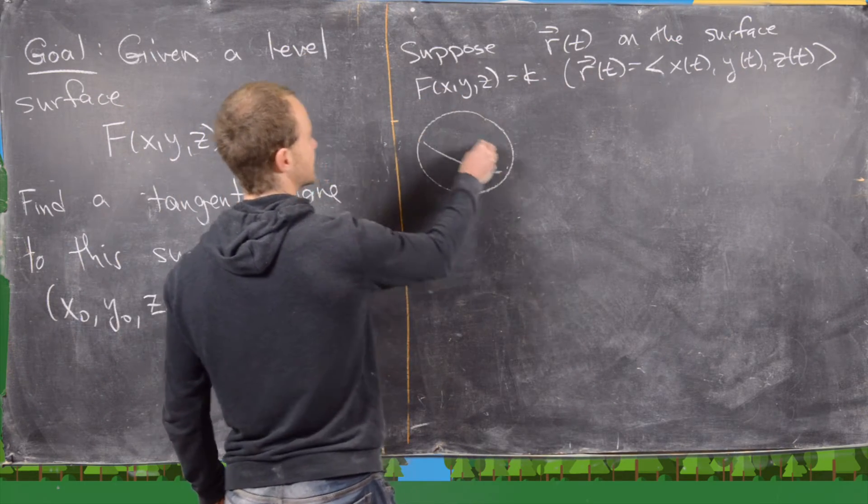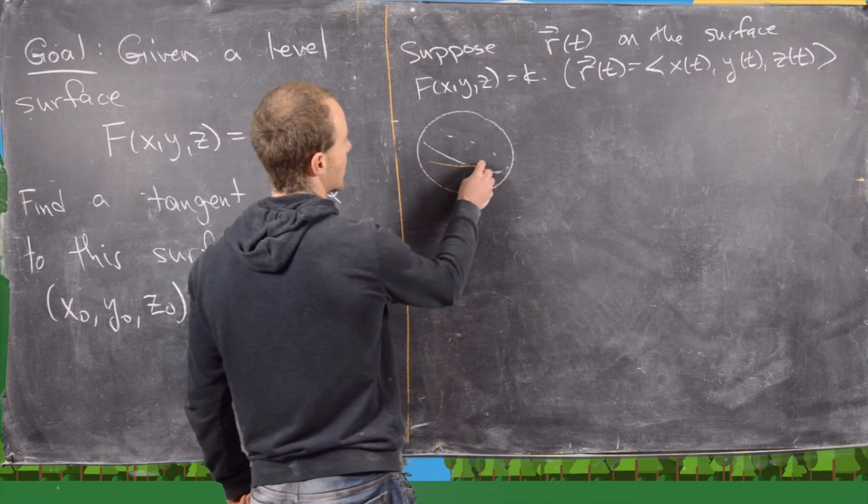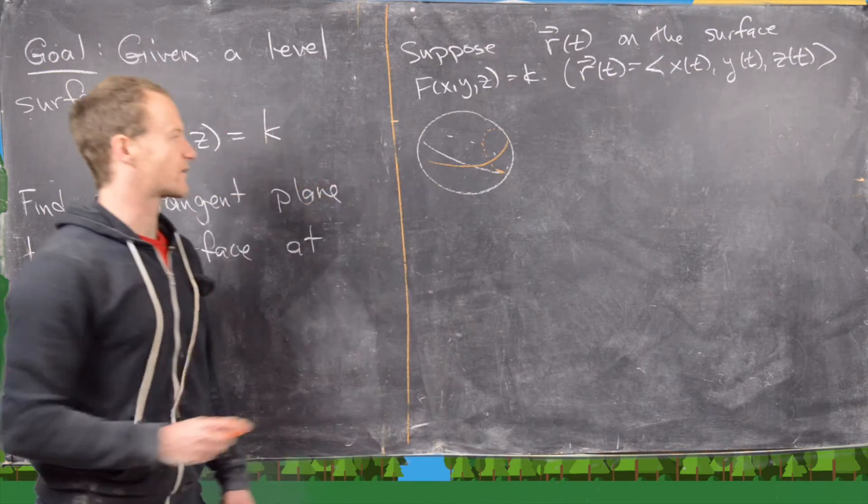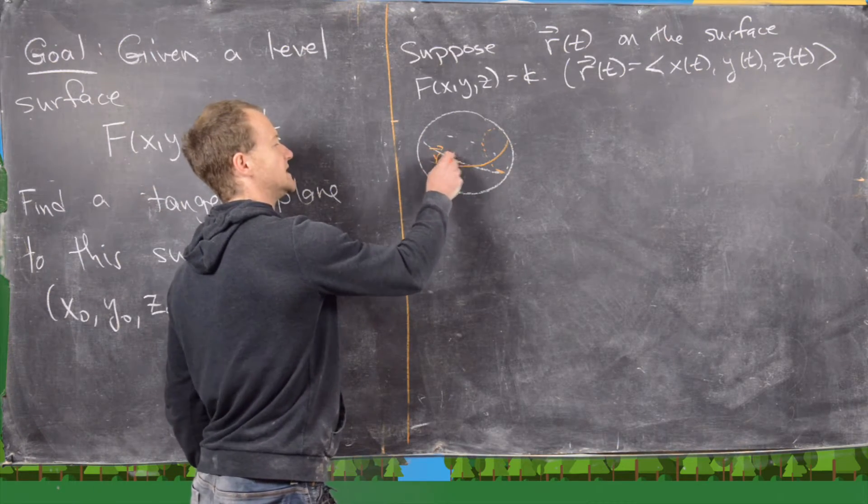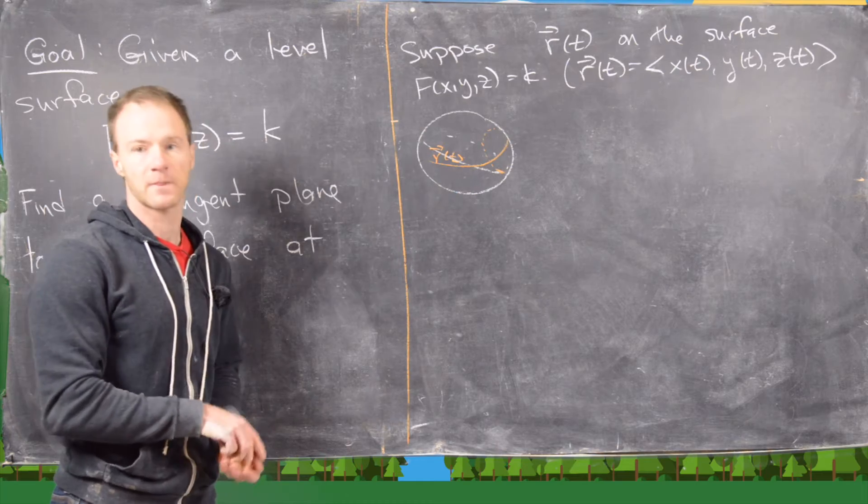Let's say our surface is this sphere. Then maybe our r of t is some sort of curve on the sphere like that. So this would be like r of t, and this would be f of x, y, z equals k.